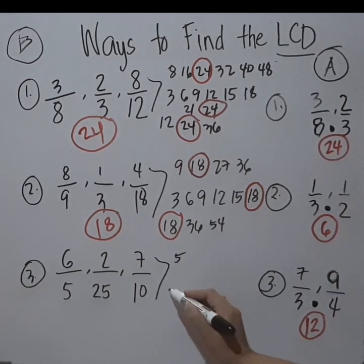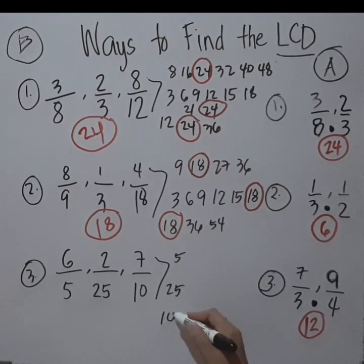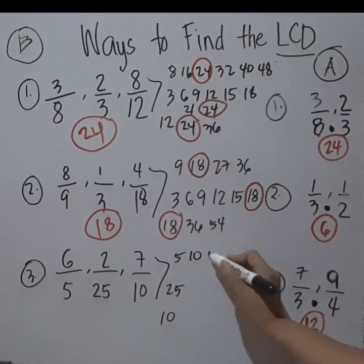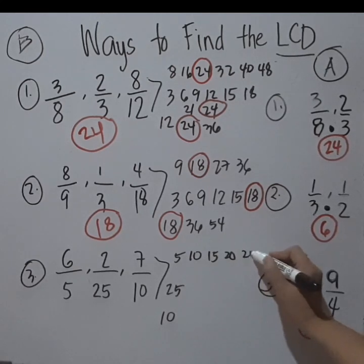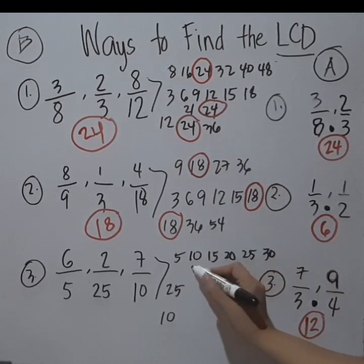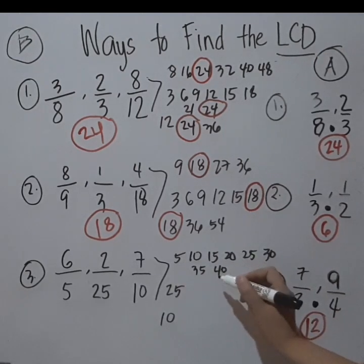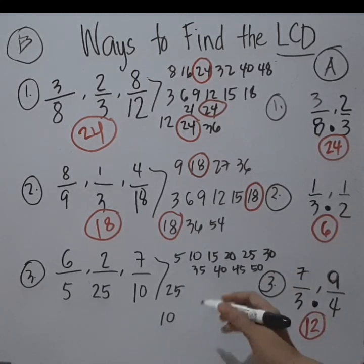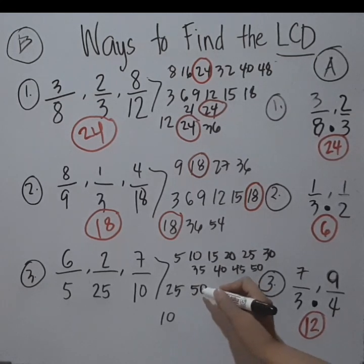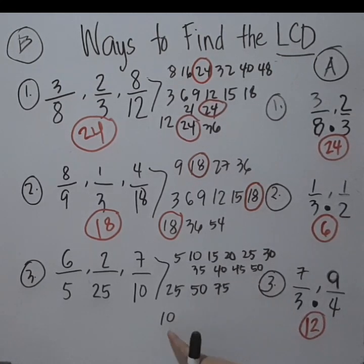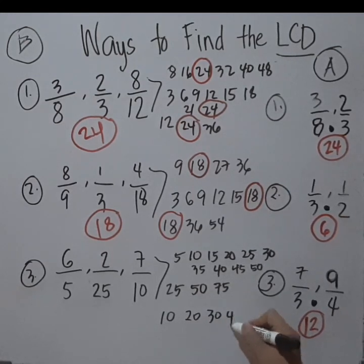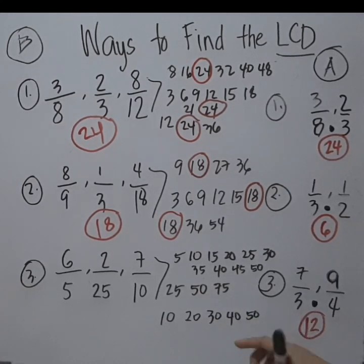For 5, keep adding: 5, 10, 15, 20, 25, 30, 35, 40, 45, and 50. For 25: 25 plus 25 is 50, plus 25 is 75. For 10: 10 plus 10 is 20, plus 10 is 30, then 40, then 50. I stopped at 50 because I can already see the common number — so 50 is the LCD for this set.